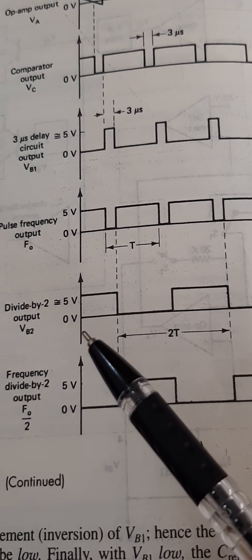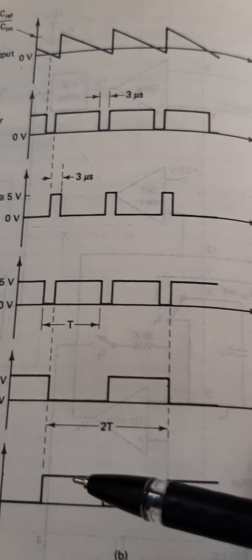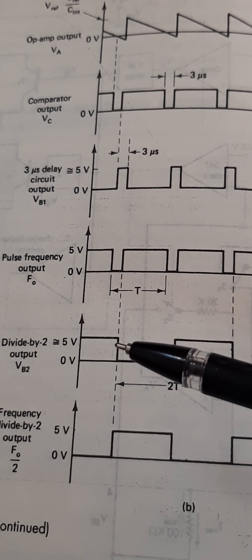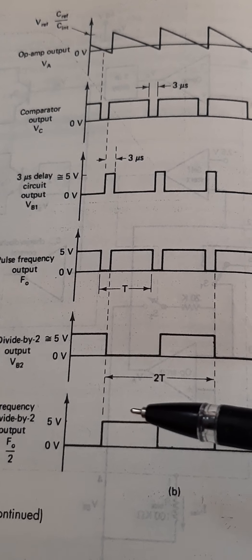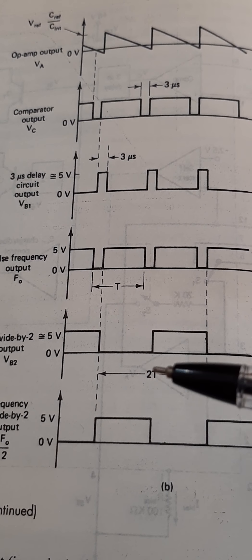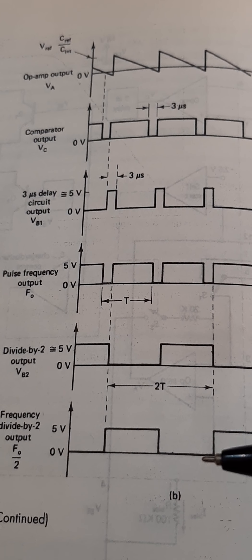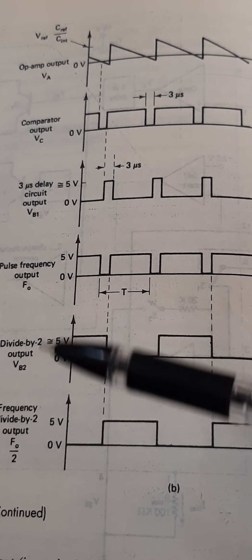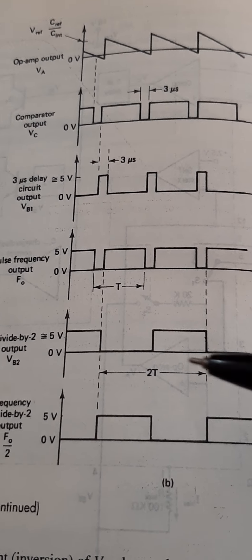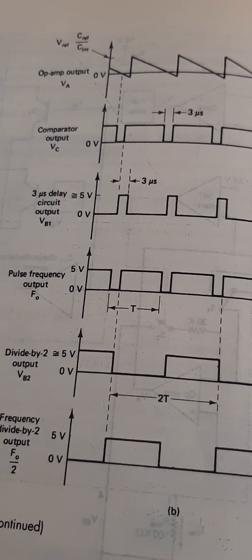The divide-by-2 output is given to transistor Q2. Whenever the divide-by-2 is low, the transistor is off and output is high; whenever it is high, the transistor is on and output is low. So you will get two output frequencies: one is F0 and another is F0 divided by 2. The input voltage is thus converted into frequency. The continuation of this video will be given after this.